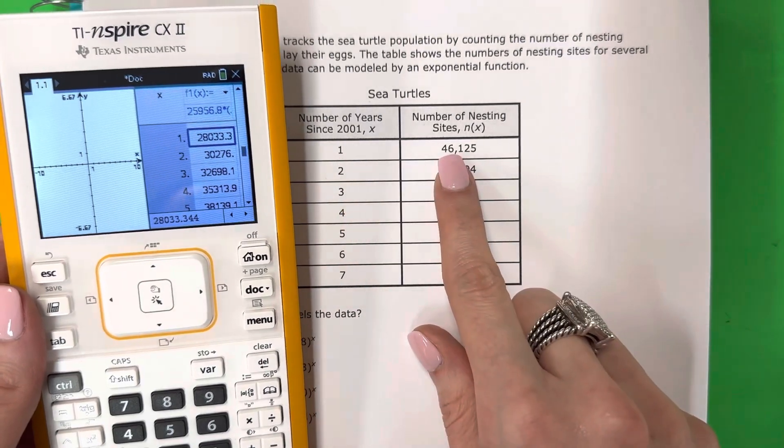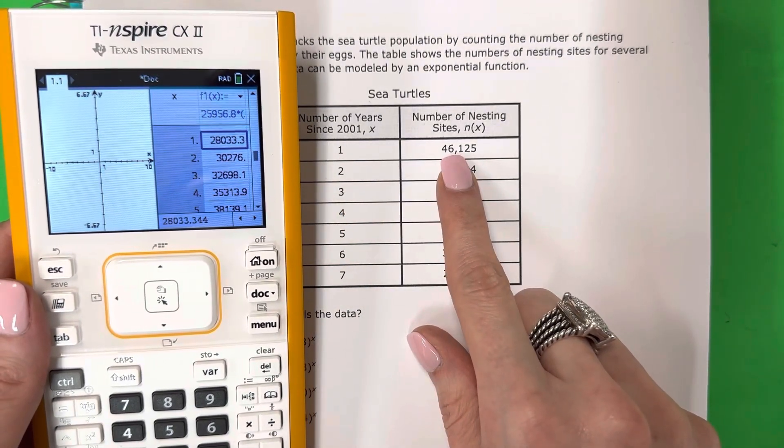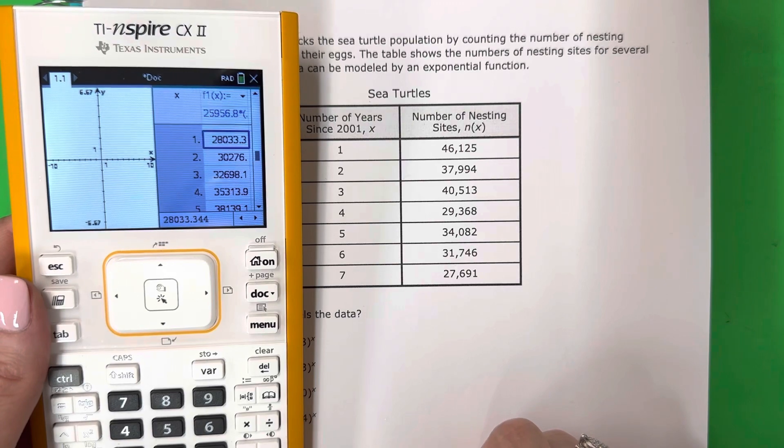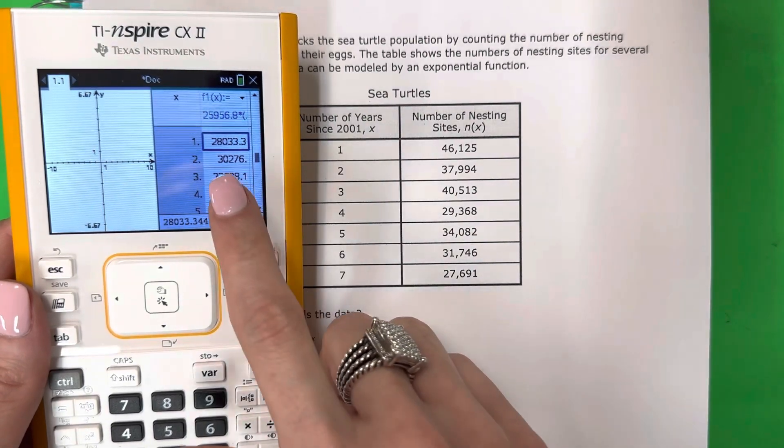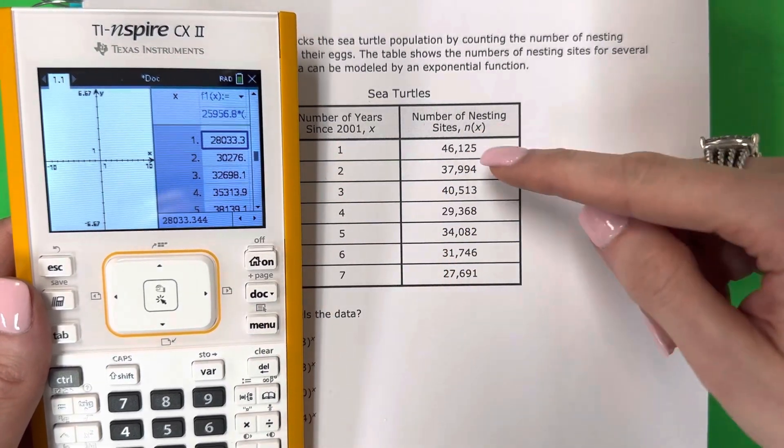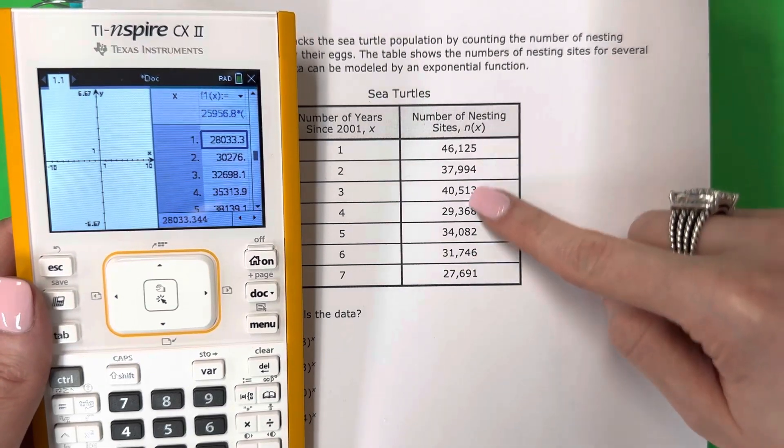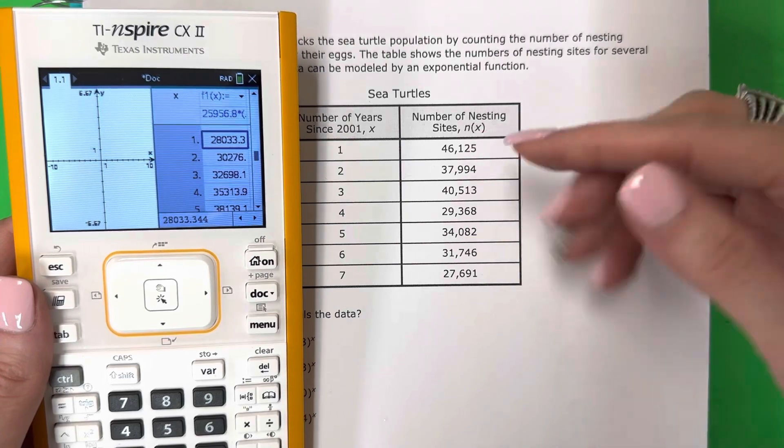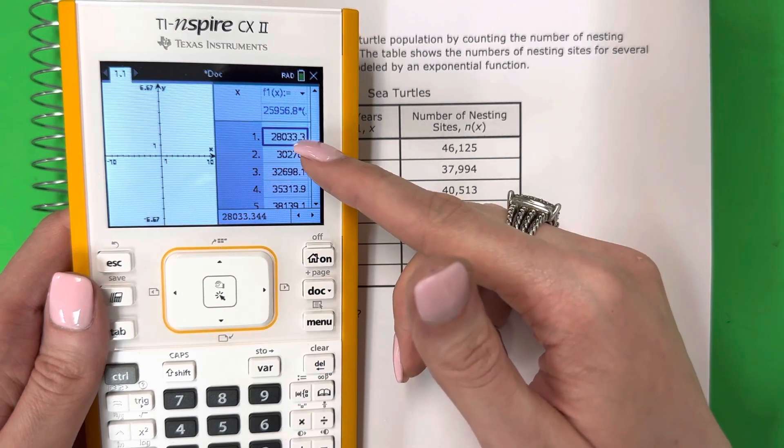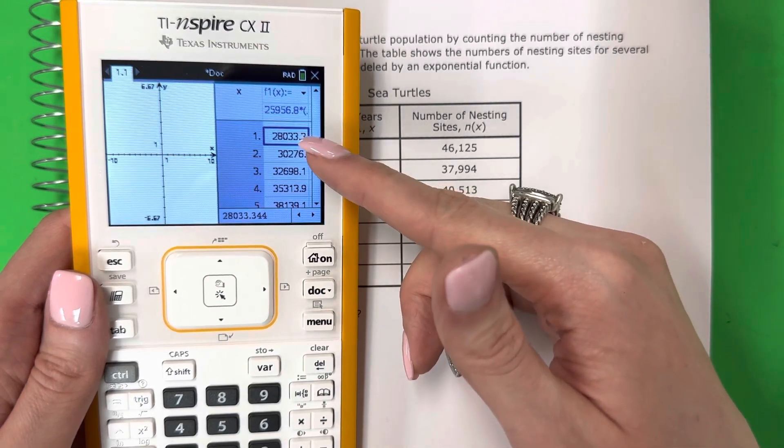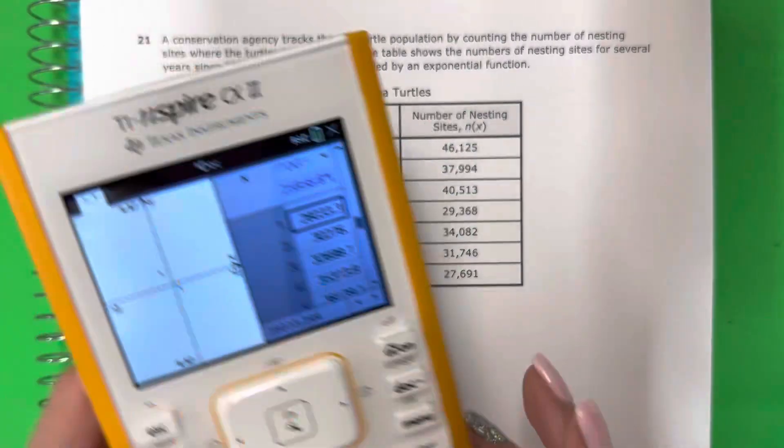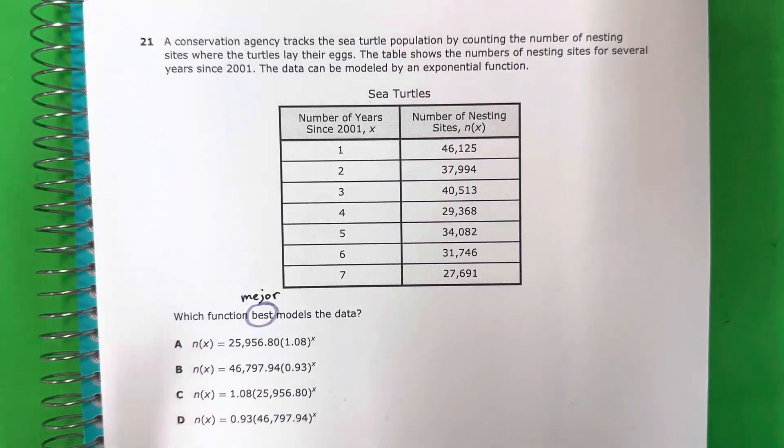So, one is 46,000. Here it's 28,000. That's, I feel like that's not really good. No creo que es muy bueno. Two, here is 30,000. Here's 37,000. Look at this. Here the numbers start big, and they're getting smaller. Aquí los números comienzan grandes, y están menorando. And here, they're getting bigger. It starts small, and it finishes bigger. So, that's not really good. A is no.